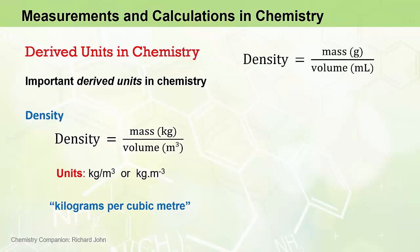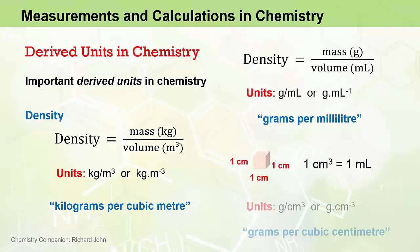But again, in chemistry we typically see other units being used to measure mass and volume. For example, mass is often expressed as grams, and volume is often expressed as millilitres. The units for density when these quantities are used would therefore be grams per millilitre. Now a millilitre is actually equivalent in volume to one cubic centimetre, so you will also commonly see grams per cubic centimetre as a unit for density.